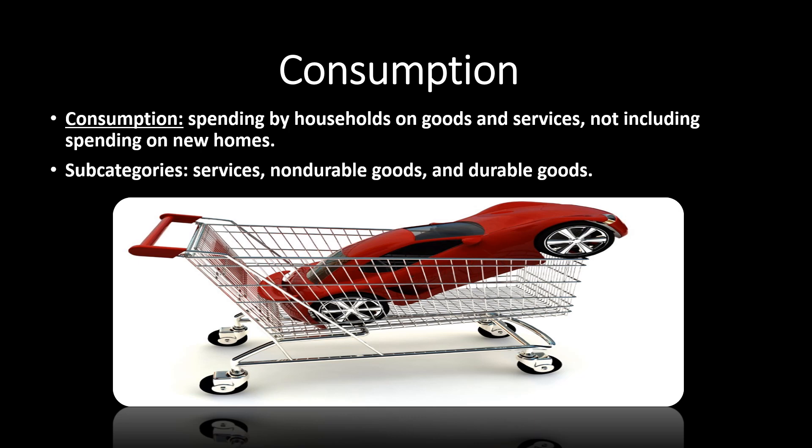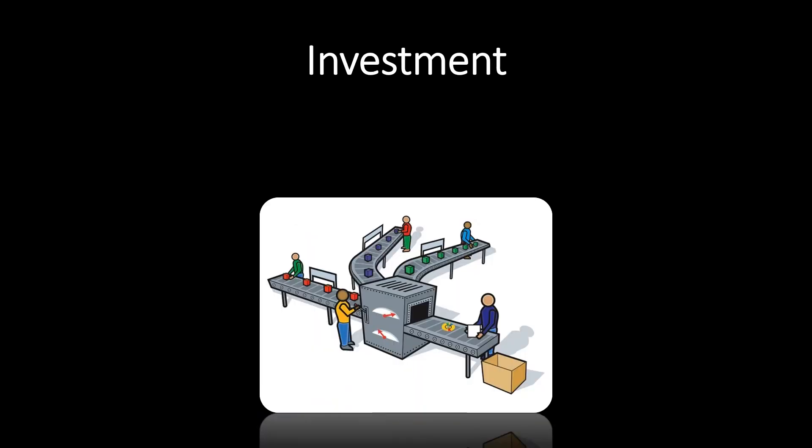Consumption has subcategories: services, non-durable goods, and durable goods. Durable goods are things you spend a good amount of money on that last a decent amount of time — think cars, computers. Non-durable goods include food and clothing, things you buy more often. Services are exactly what they sound like — haircuts, education, financial services. In the United States we are a service-based economy: consumption overall makes up about 68% of GDP, and services alone make up about 45% of all GDP.